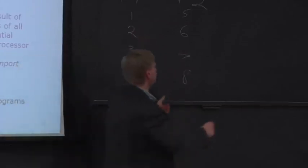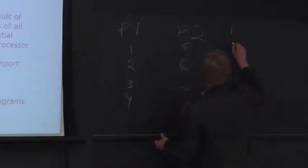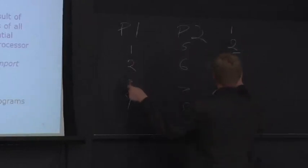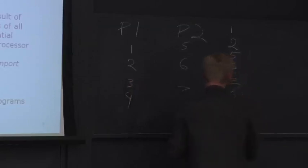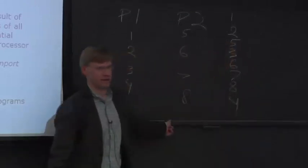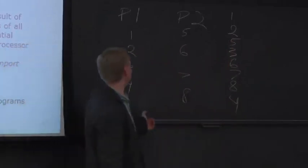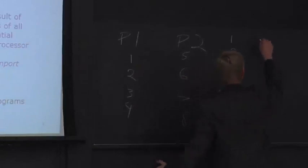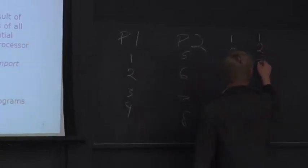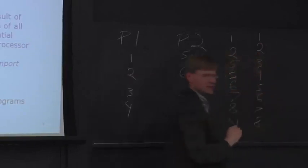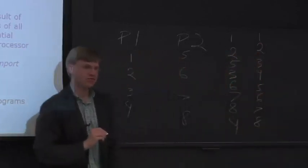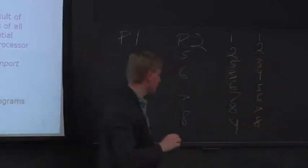So let's say 1 and 2 happened, then 5, then 3, then 6, then 7, then 8, then 4 — that is a valid sequentially consistent order. Likewise, another one easier to reason about is 1, 2, 3, 4, 5, 6, 7, 8 — that's valid in sequential consistency. Likewise, 5, 6, 7, 1, 2, 3, 4, 8 is also a valid order.